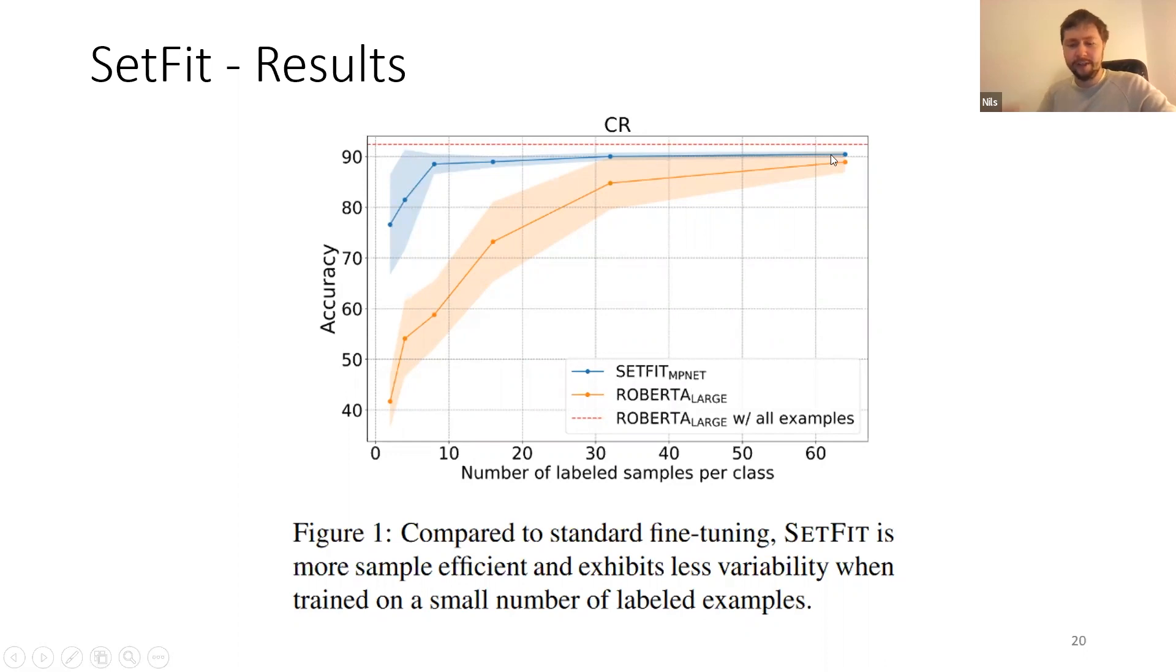So the red one is training on all the training data we have. And here with eight examples or 16 examples per class, we got already a score that's really close. And this gives you a classifier that works extremely good, even if you have little training data.